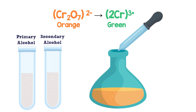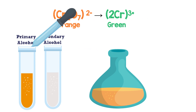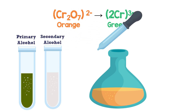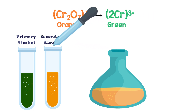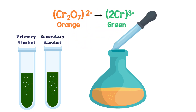With both primary and secondary alcohols, potassium dichromate acts as the oxidizing agent. The orange color of the dichromate changes into the green color of the chromium ion.